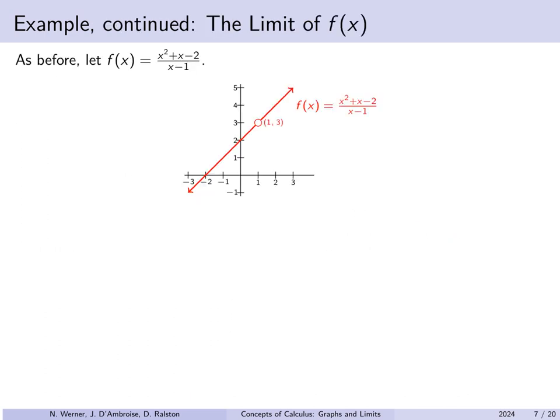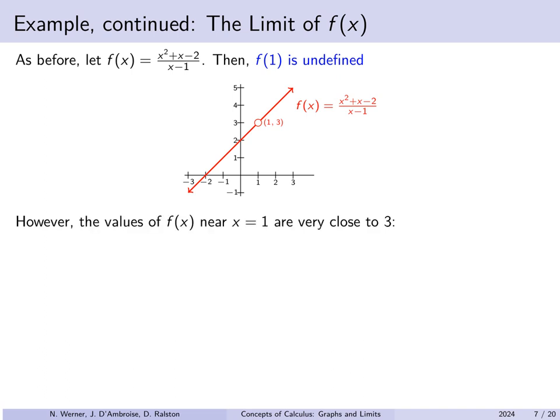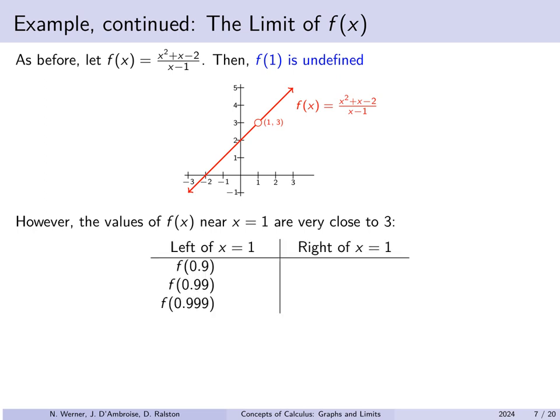Let's continue looking at the same function. f of 1 is undefined — 1 is not in the domain because of the denominator x minus 1. But the values of f of x near x equals 1 are very close to 3. If we plug in values of x very close to 1 but not equal to it on the left, like 0.9, 0.99, or 0.999, we get out values 2.9, 2.99, 2.999, because as long as x isn't exactly equal to 1, f of x is simply equal to x plus 2.